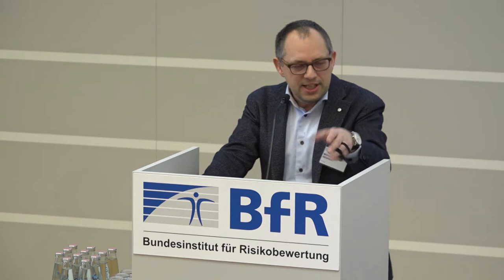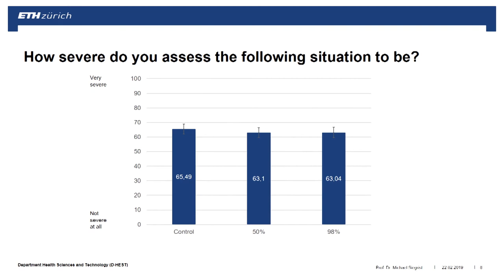Data was collected in German. The first question was: how severe do you assess the following situation to be? There was absolutely no difference between the three groups. Whether you look at the control group with only the point estimate, the 50% interval group, or the 98% interval group, it made no difference to participants — severity was rated the same.